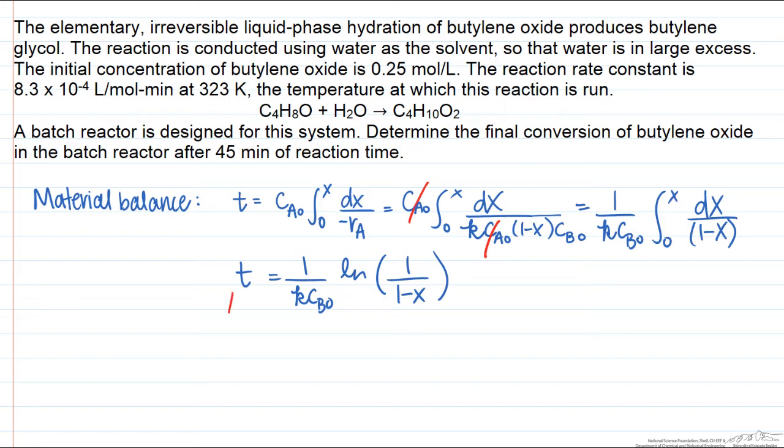The time is equal to 45 minutes. That's how long we're going to allow the batch to run. k is given as being 8.3 times 10 to the minus 4 liters per mole minute. CB0 is the molar density of water. Water has an approximate molar density of about 56 moles per liter. This is a dilute system in water. Bulk water is 56 moles per liter. You can see that the concentration of A is far, far less, more than a couple of orders of magnitude less. So it's a good assumption that water is in great excess in this system.